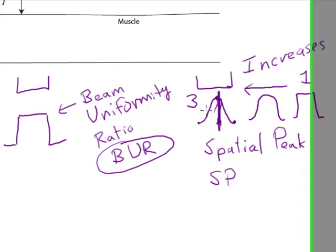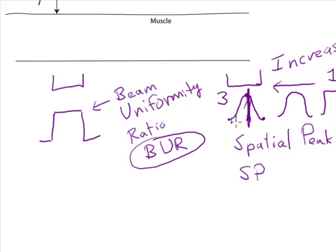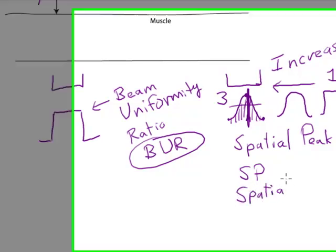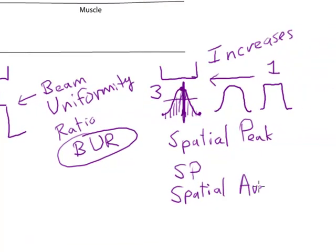The other thing we could do is take the average intensity, measure the intensity at all the different places across the beam. And that would be called the spatial average, and that's abbreviated SA.